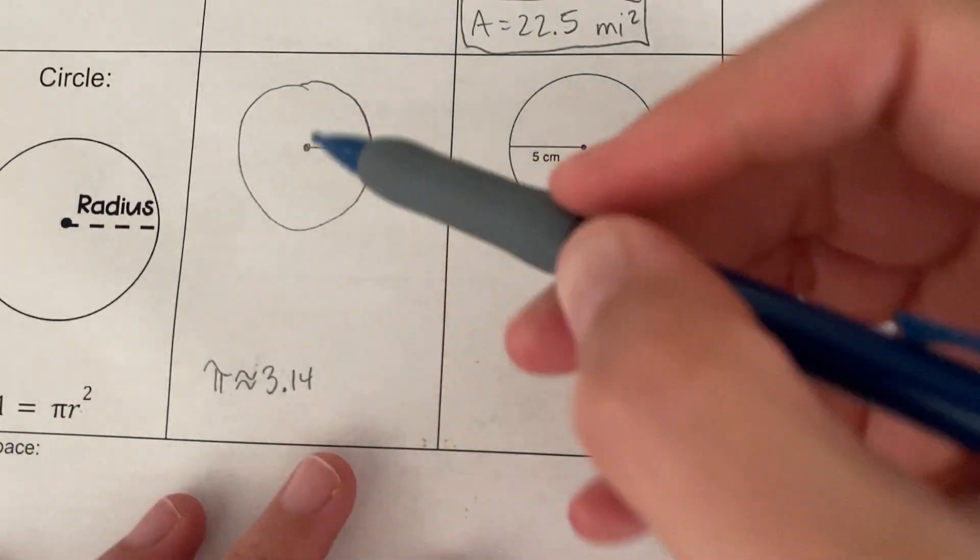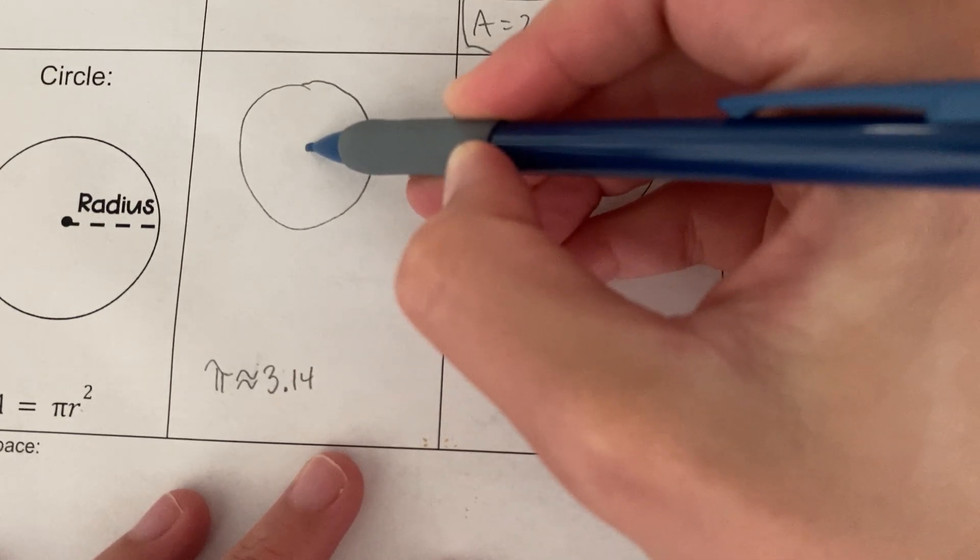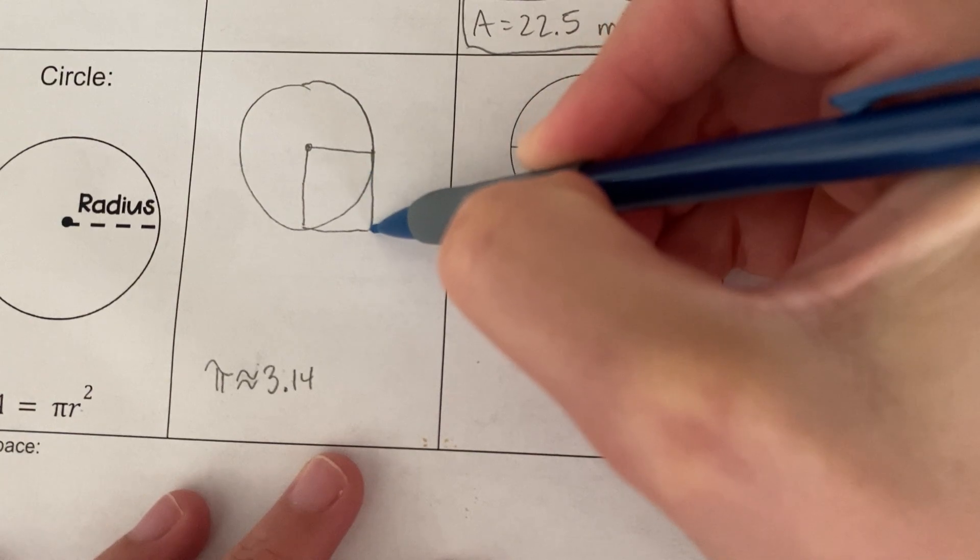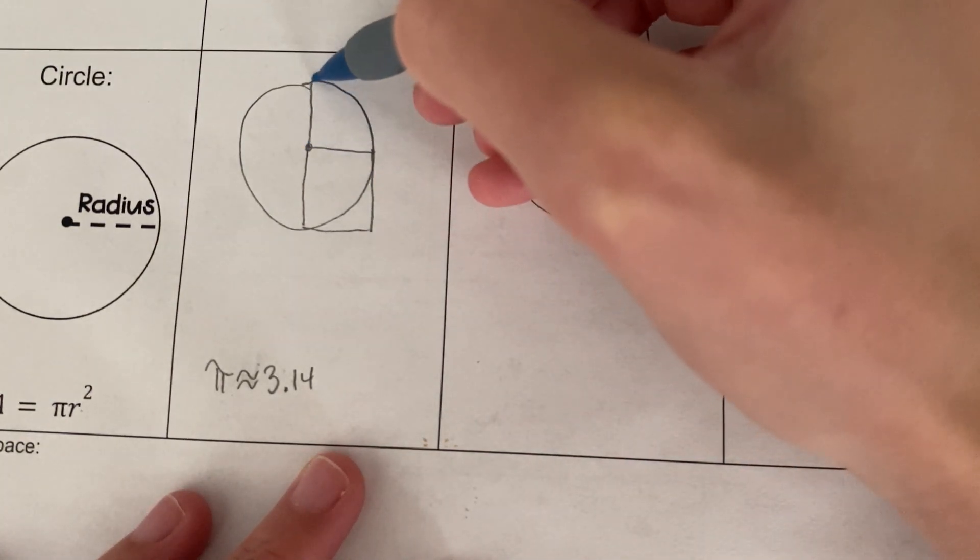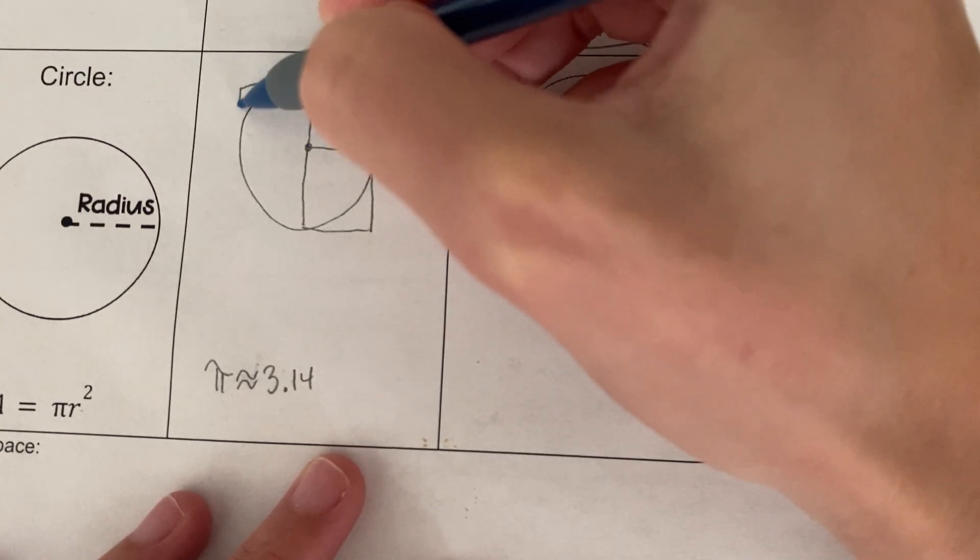So why does the formula work? Okay, so look, here's the radius. If I were to square the radius, that's this. That means I'm going to take a square that has the length of the radius and make a square. Here's the radius. I'm going to make a square.